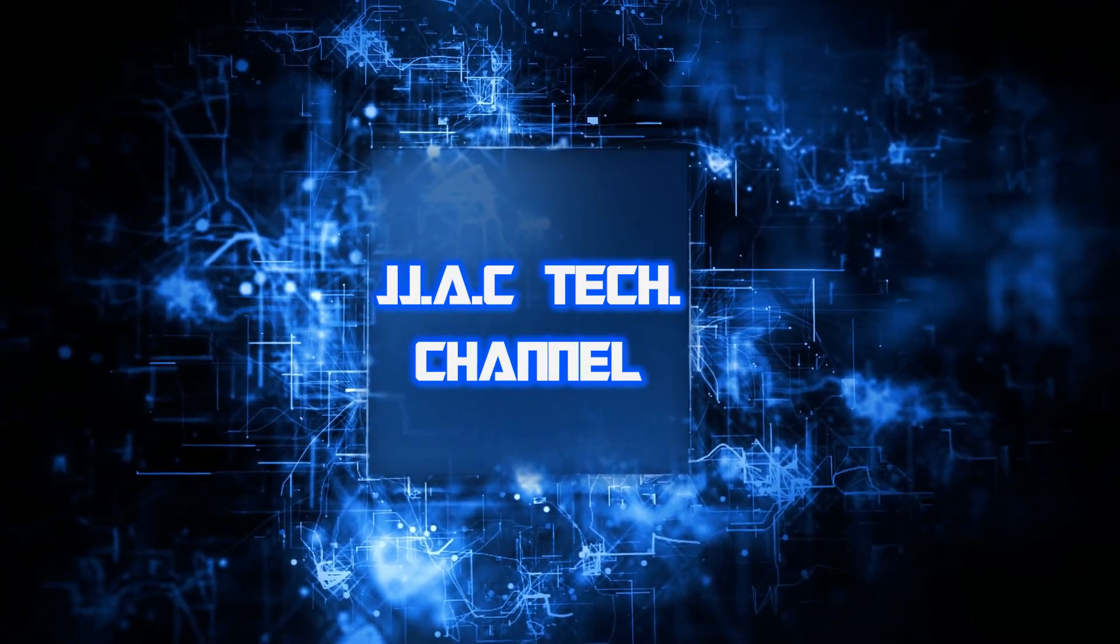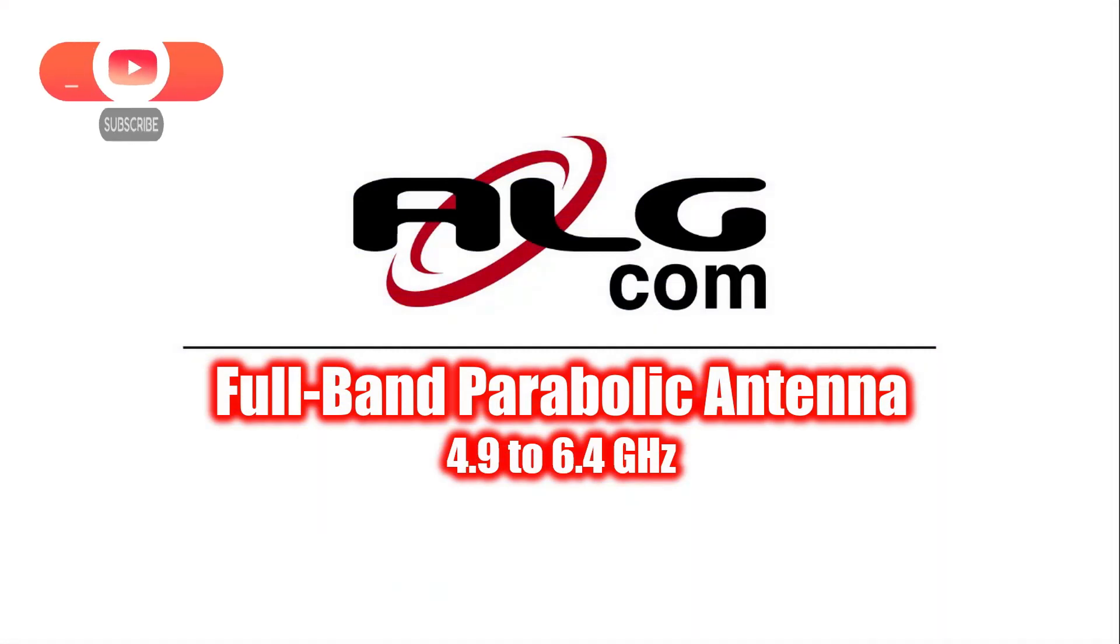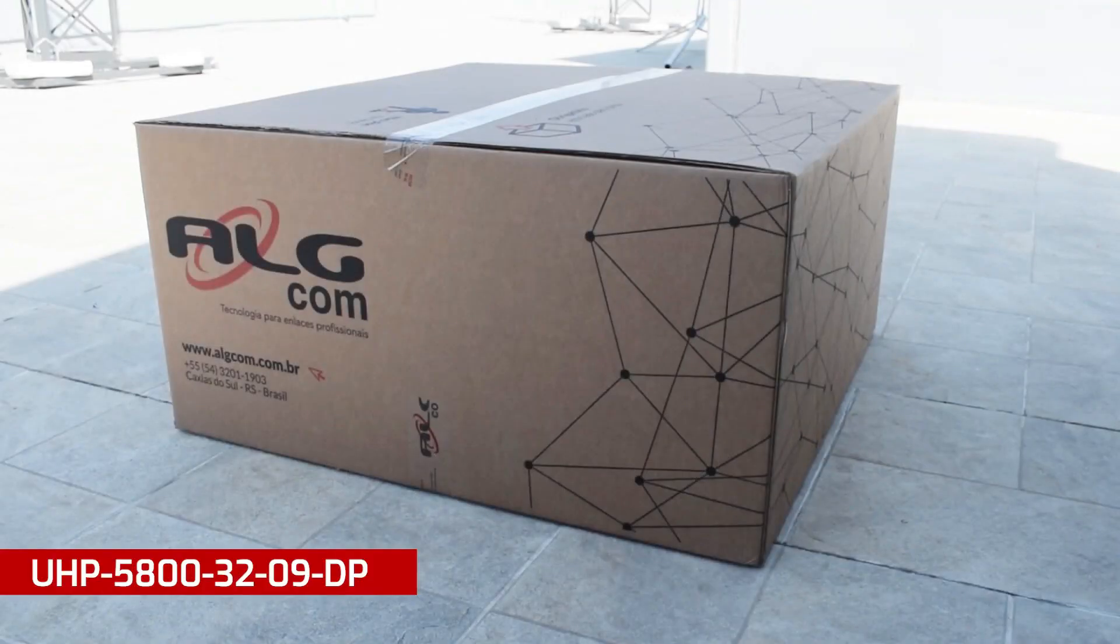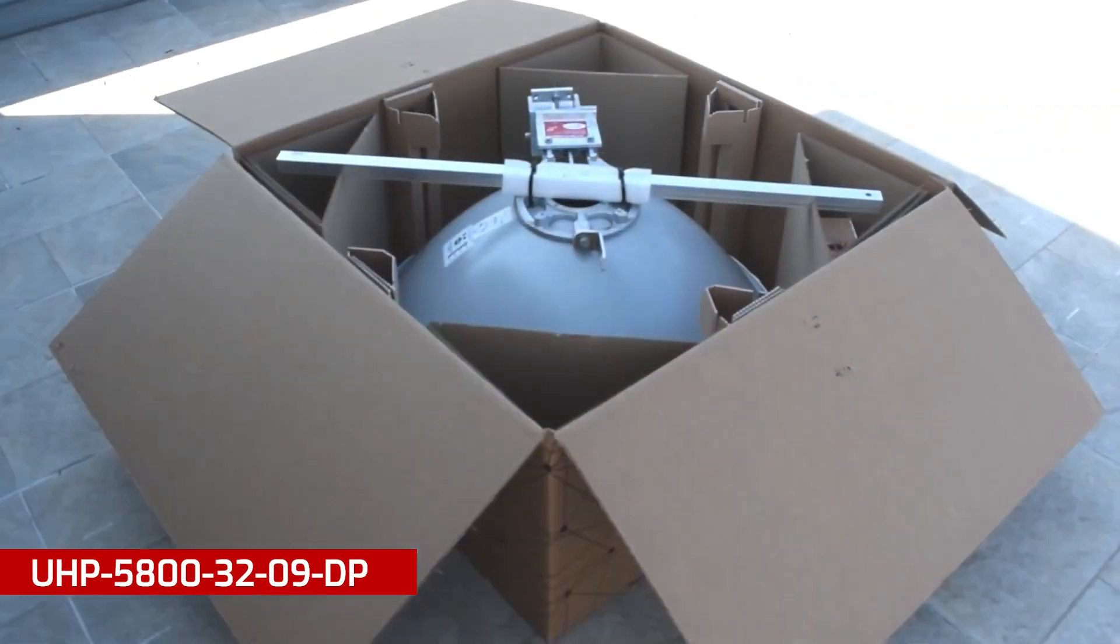JJAC Tech Channel. Algcom full-band parabolic antenna: incredible bandwidth, 4.9 to 6.4 gigahertz. Deep dish reflector for excellent shielding across the entire bandwidth. Unboxing and installation.